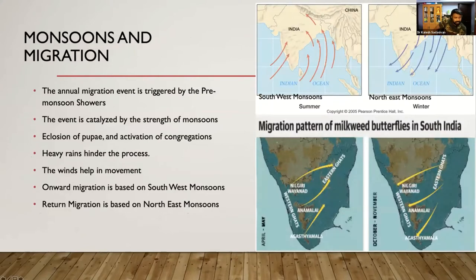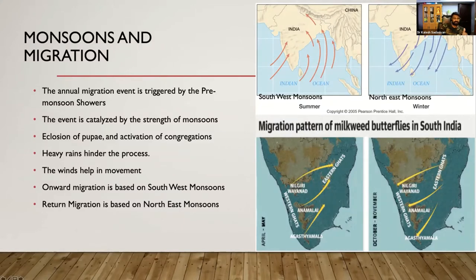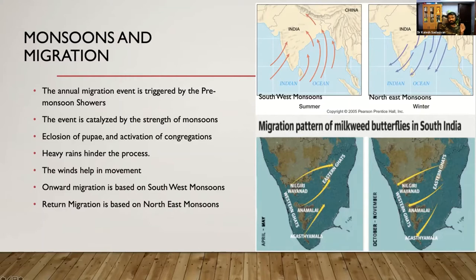It's the monsoons that trigger and sustain migration. This annual event is triggered by pre-monsoon showers — butterflies waiting in congregations or in pupal diapause get triggered by strong pre-monsoon showers. The event is then catalyzed by the strength of the monsoon. As rains establish strongly, the rate of migration also increases, but there is a negative correlation too — as rains become very heavy, migration ceases. Winds also help — the butterflies ride wind currents. The onward migration from Western Ghats to Eastern Ghats is based on the southwest monsoons, and the return migration is based on the northeast monsoons.